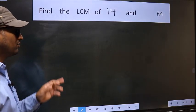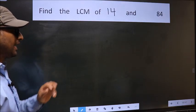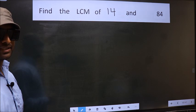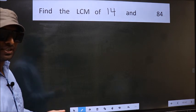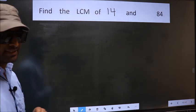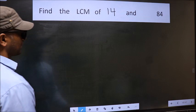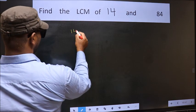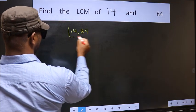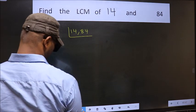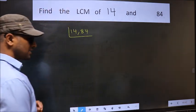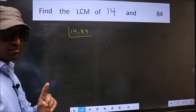Find the LCM of 14 and 84. To find the LCM, first we should frame it in this way — that is 14 and 84. This is step 1.